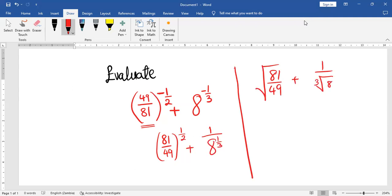The square root of 81 is 9, the square root of 49 is 7, plus 1 over, what do we get here? The cube root of 8 is 2.